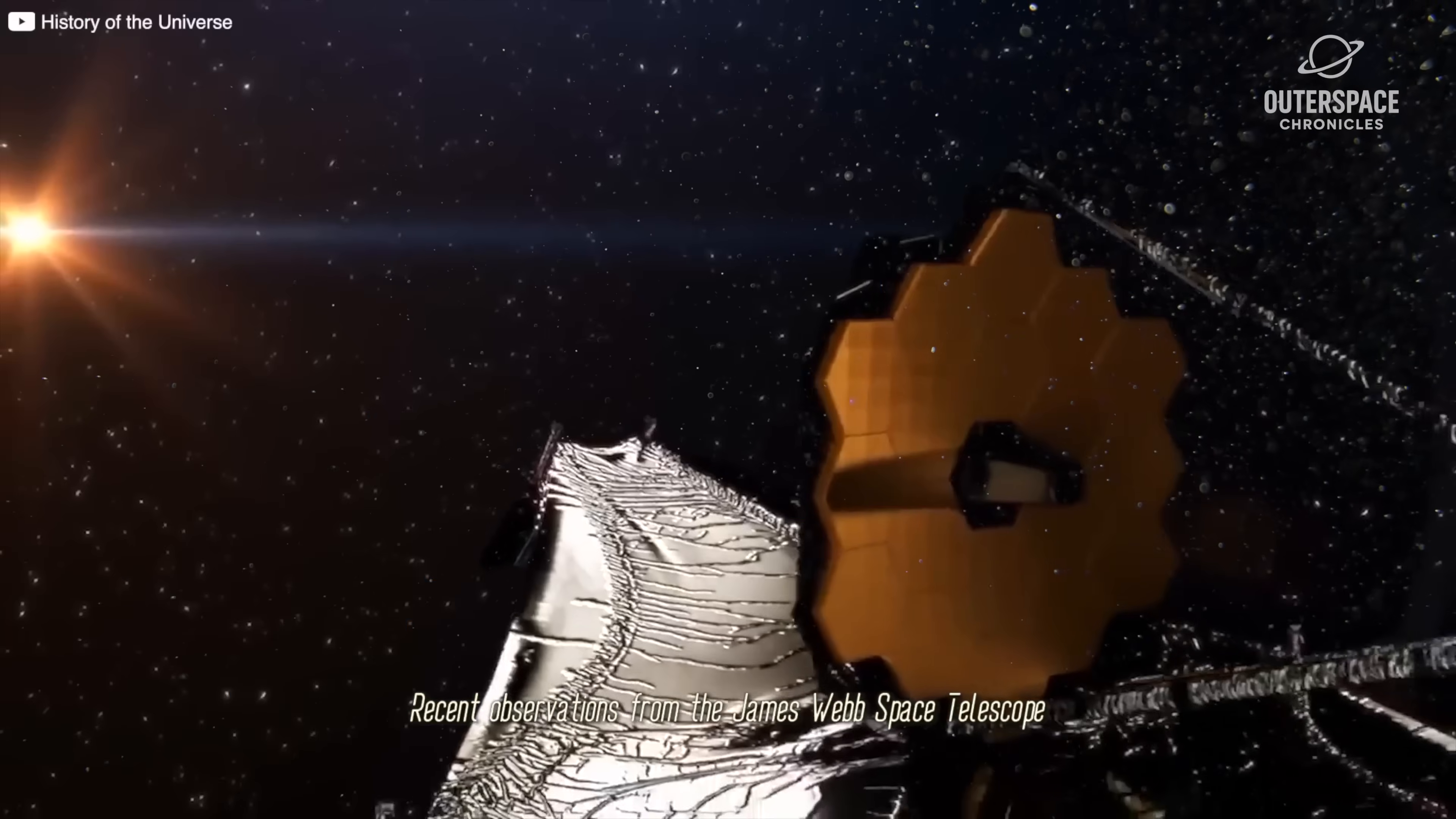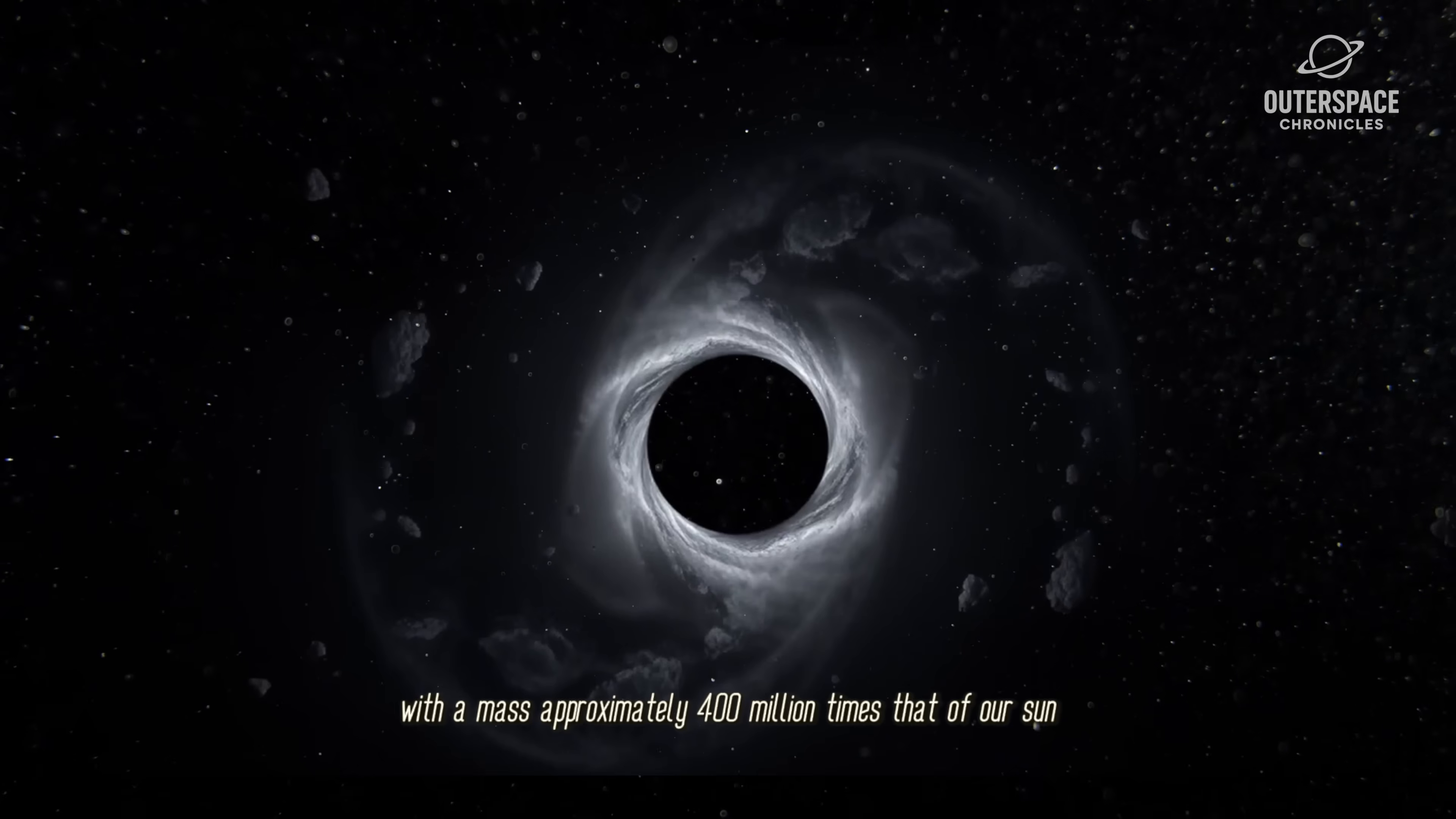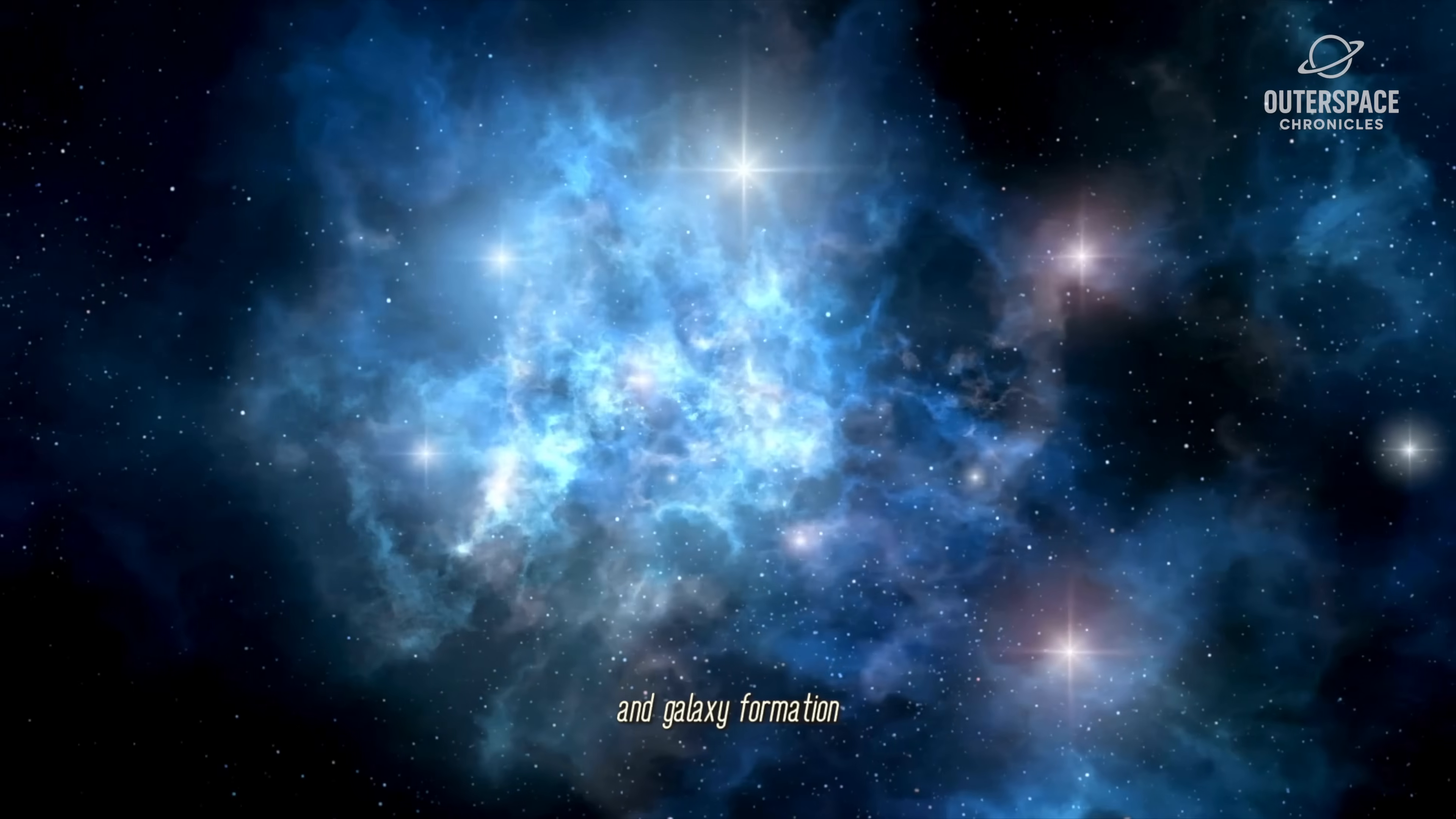Recent observations from the James Webb Space Telescope have led to a groundbreaking discovery in our understanding of the universe. A black hole with a mass approximately 400 million times that of our Sun has been detected hidden within the intricate structure of space. This finding has significant implications for our knowledge of black holes and galaxy formation.